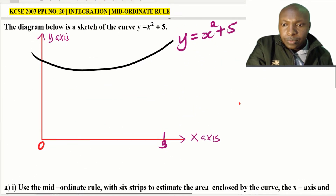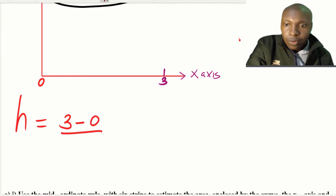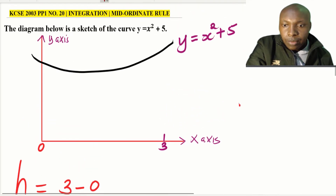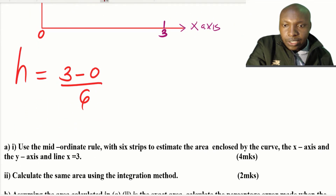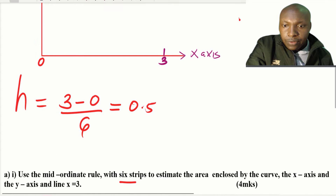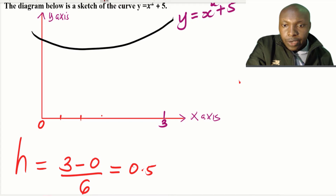Starting with part one using the Mid-Ordinate Rule with six strips, we first find the interval height. We take the limits: 3 minus 0, divided by the number of strips which is 6. This gives us an interval height of 0.5.